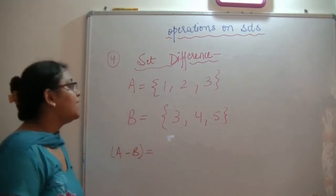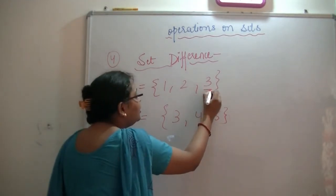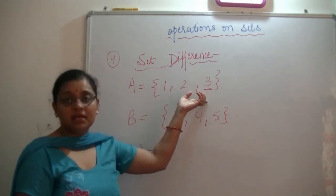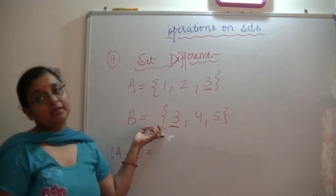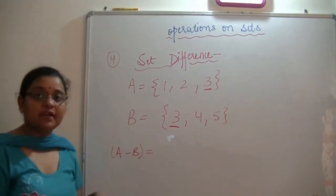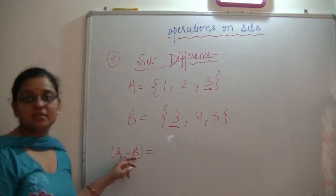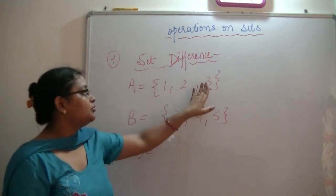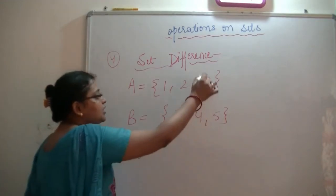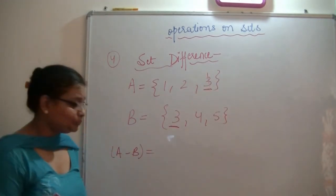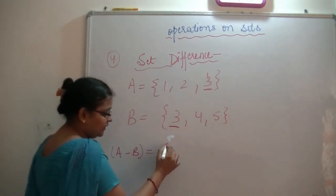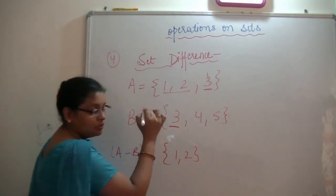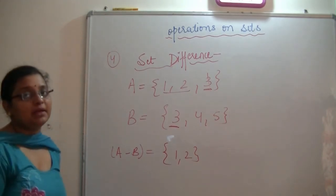Let's check if there is any element in A that belongs to B. Yes — element 3 belongs to both A and B. Because we are finding the difference, we have to remove 3 from A. When we remove it, what remains is 1 and 2. So A-B = {1, 2}.